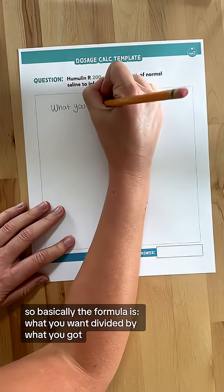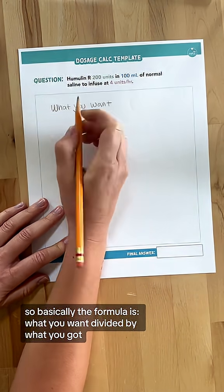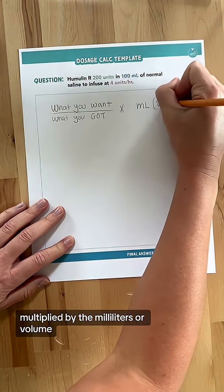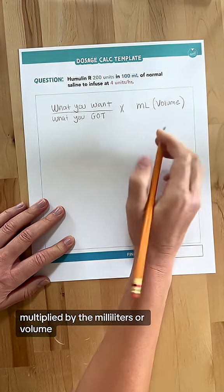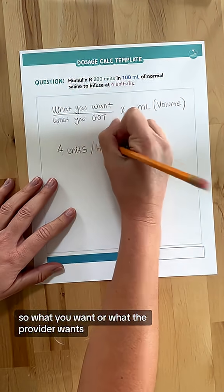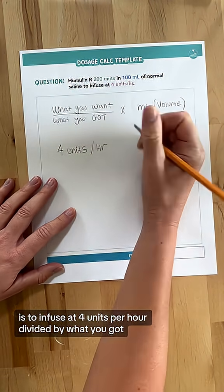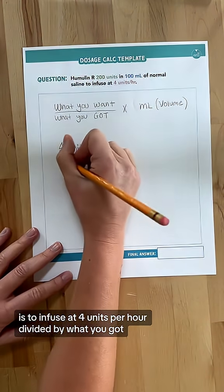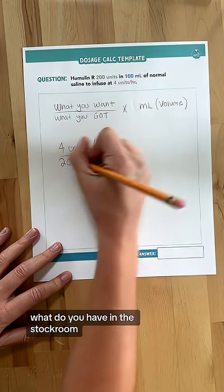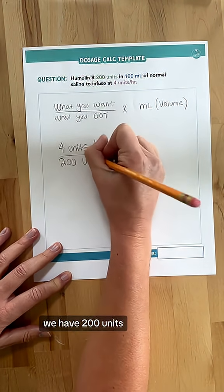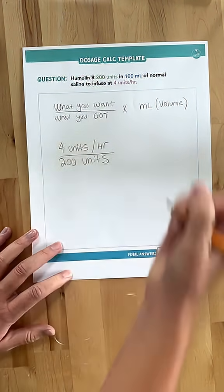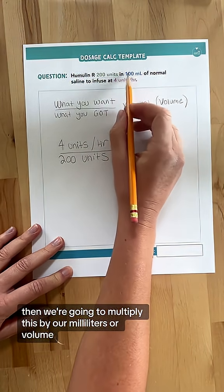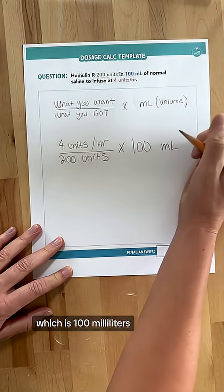The formula is what you want divided by what you got, multiplied by the milliliters or volume. What the provider wants is to infuse at four units per hour, divided by what you got — what you have in the stock room, which is 200 units. Then we multiply by our volume, which is 100 milliliters.